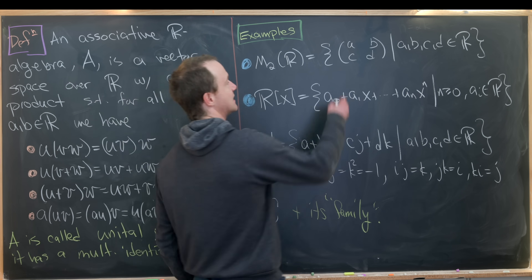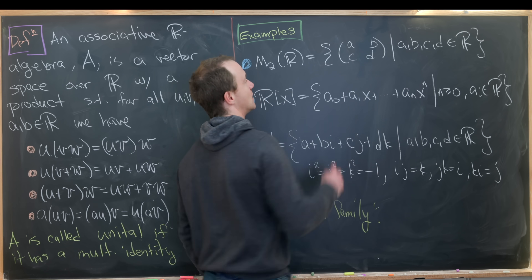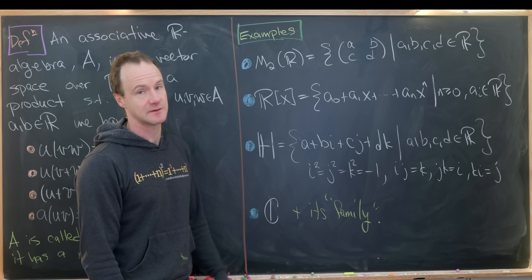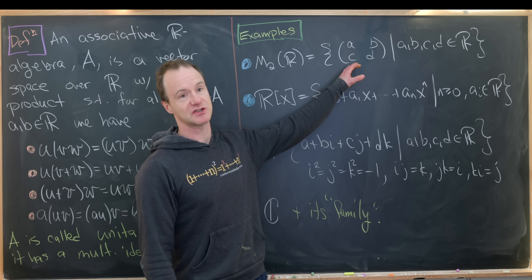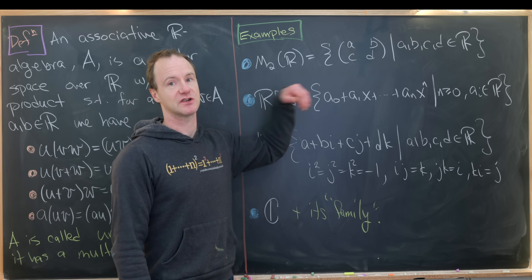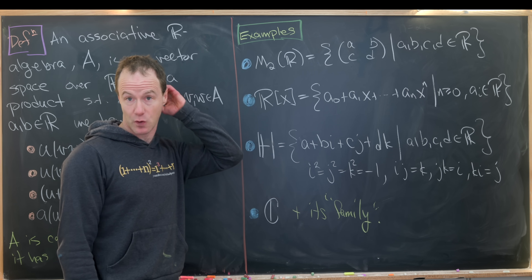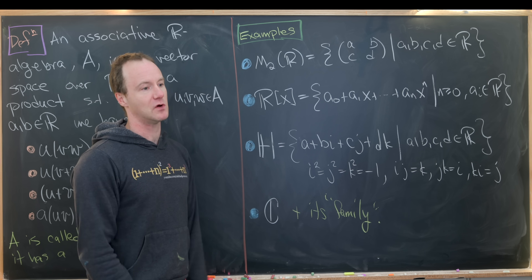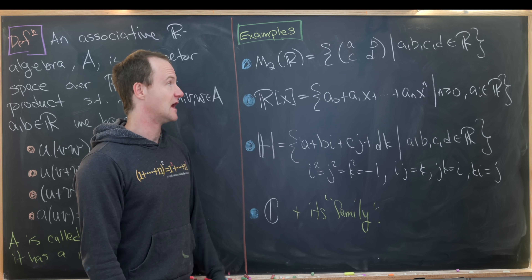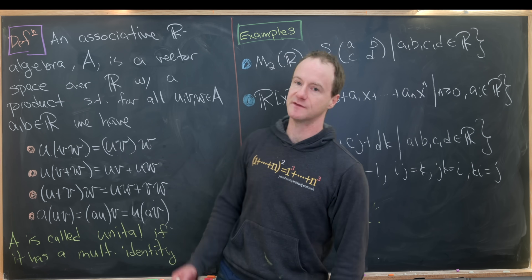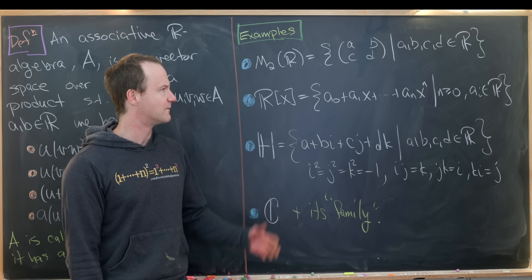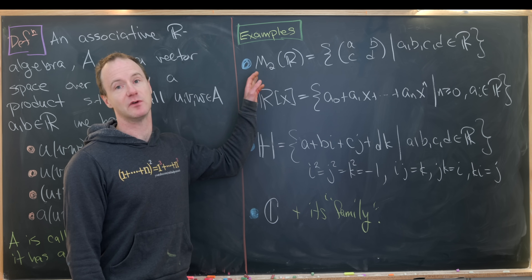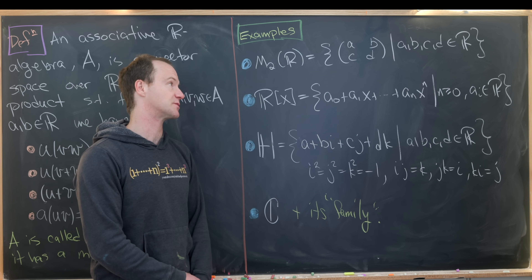Our first example is pretty classic: the space of all two-by-two matrices. This could really be the space of all N-by-N matrices. This is most definitely a vector space — a four-dimensional vector space, or in general an N²-dimensional vector space. And of course we've got a method for multiplying matrices, which satisfies all of these rules. Furthermore, matrix multiplication is not commutative, so this is an example of a non-commutative associative algebra over R.